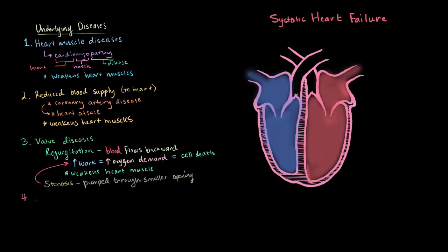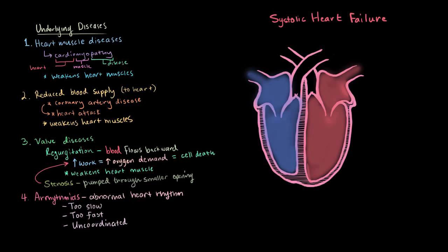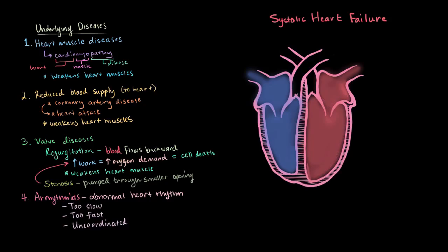The last category is arrhythmias, meaning abnormal heart rhythm. This could be a rhythm that's too slow, too fast, or even uncoordinated — where the chambers don't contract at the same time. Maybe the left ventricle fires before the right, or vice versa. All of these lead to a serious reduction in pumping efficiency, meaning less blood is pumped to the body, and by the same mechanism as before, more work means more oxygen demand and more cell death.